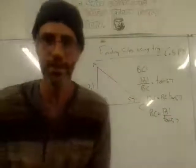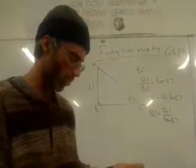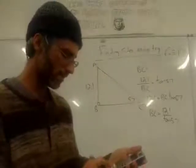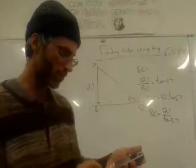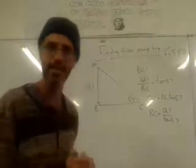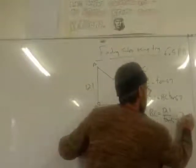And we can do that in the calculator. So have a go at that. It's going to be 12.1 divided by, and you just write tan 57, close brackets, and I get, check me please, 7.86.